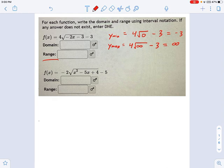So that means the range is going to go from negative 3, inclusive, meaning square brackets, all the way up to infinity. And we can do this for the next one. It's not that much harder.